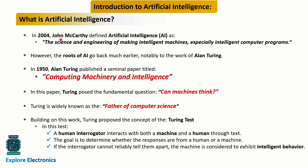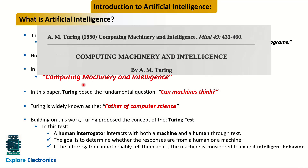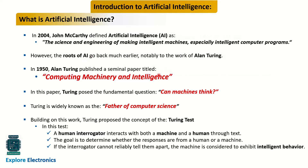What is artificial intelligence? In 2004, John McCarthy defined artificial intelligence as the science and engineering of making intelligent machines, especially intelligent computer programs. If we go back to the 1950s where the roots of AI started, notably the work of Alan Turing — he gave a seminal paper titled 'Computing Machinery and Intelligence' in 1950, in which he posed the question: can machines think?